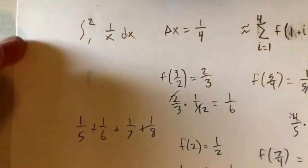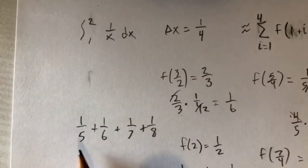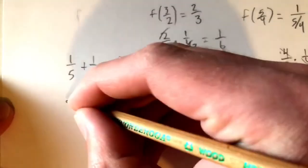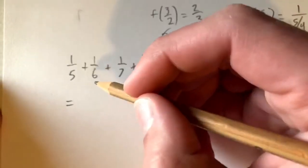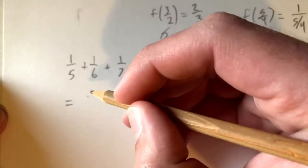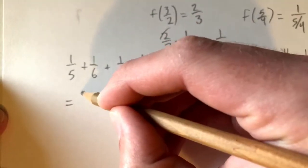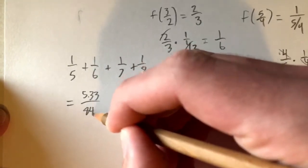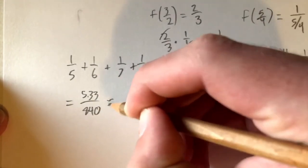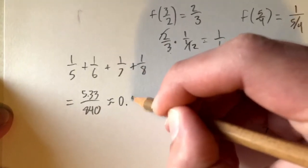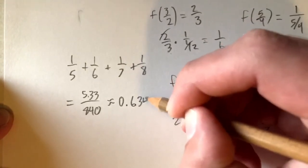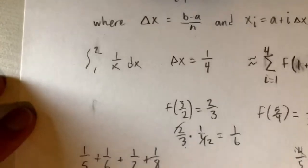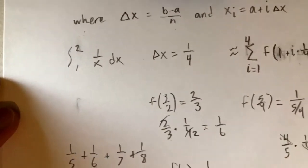So we just need to add up 1 fifth plus 1 sixth plus 1 seventh plus 1 eighth. Plugging this into a calculator or Wolfram Alpha gives us 533 over 840, which is approximately 0.6345. This is our approximation of the integral using the right endpoint method.